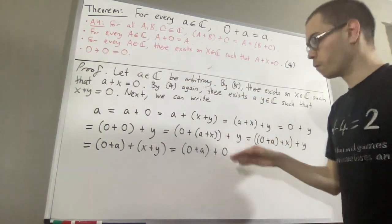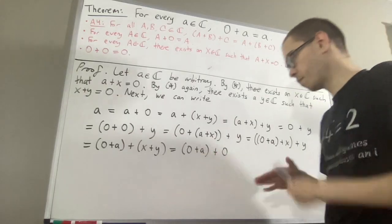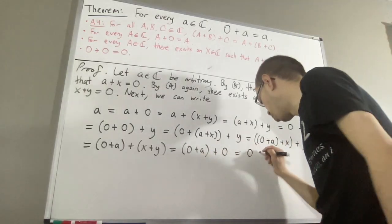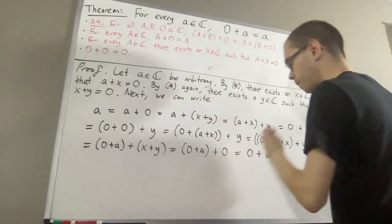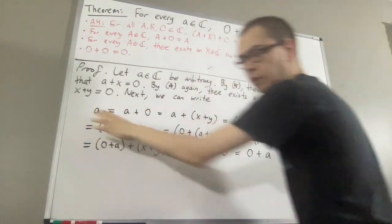So in particular, if we do the complex number 0 plus a plus 0, that will give us 0 plus a. So this long chain of equalities shows that 0 plus a is equal to a.